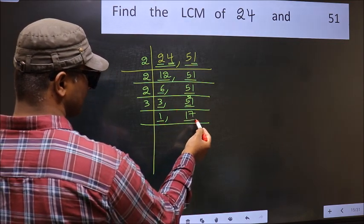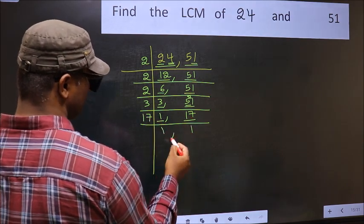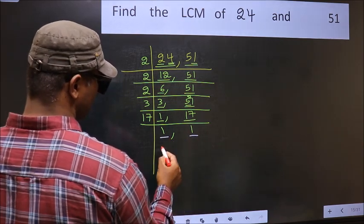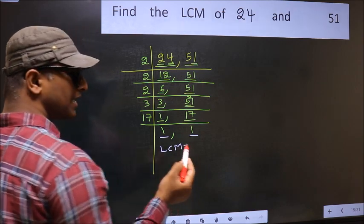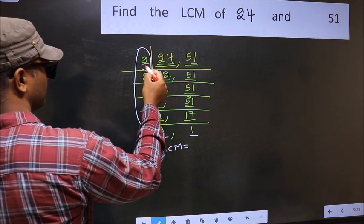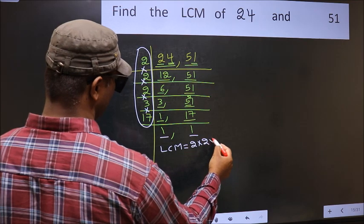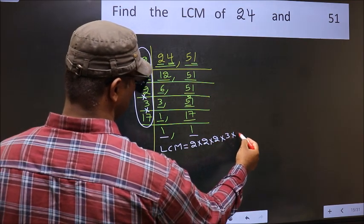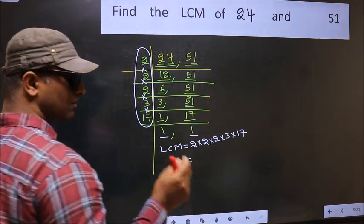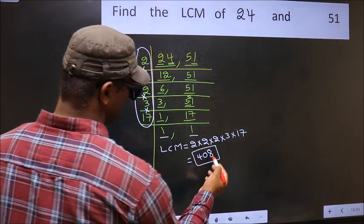So focus on the next number, 17. 17 is a prime number, so 17 ones are 17. We got 1 in both places. So our LCM is the product of these numbers: 2 × 2 × 2 × 2 × 3 × 17. When we multiply these numbers, we get 408, which is our LCM.